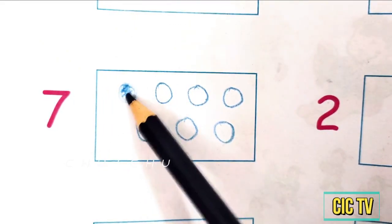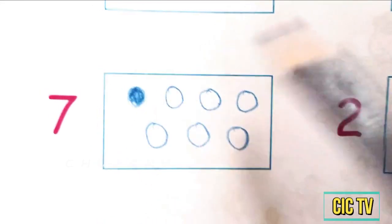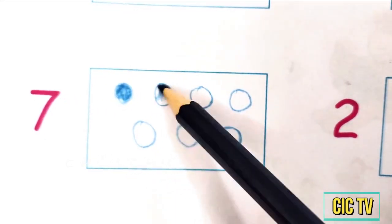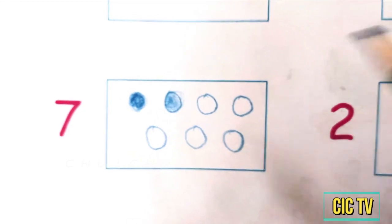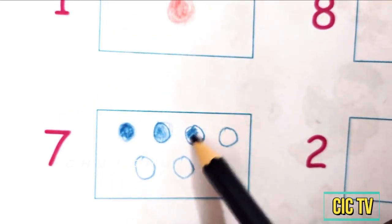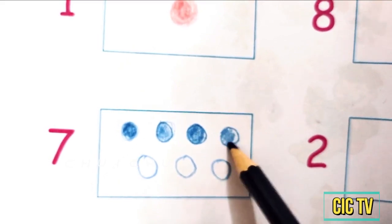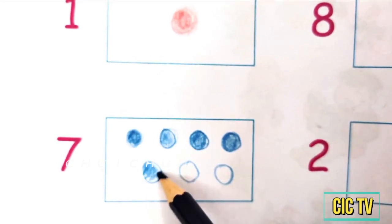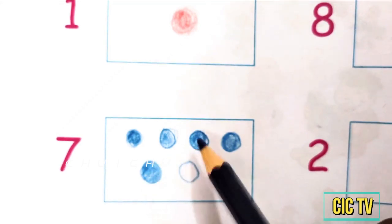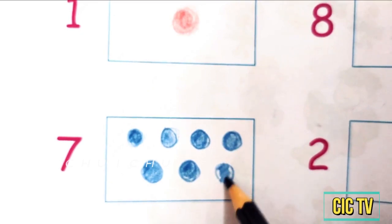Draw. 1, 2, 3, 4, 5, 6, 7 dots. Draw. 1, 2, 3, 4, 5, 6, and last only 7. 7 dots.